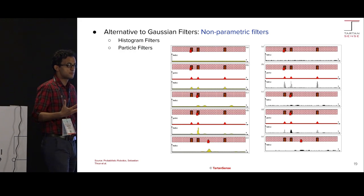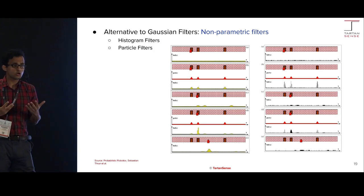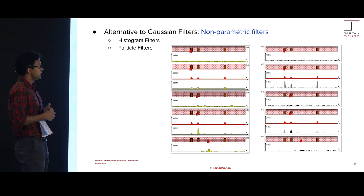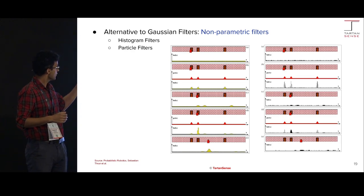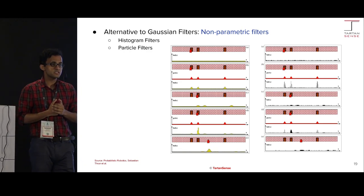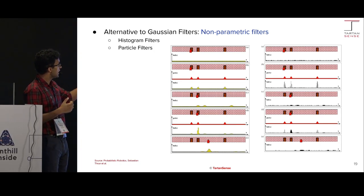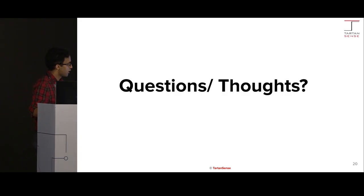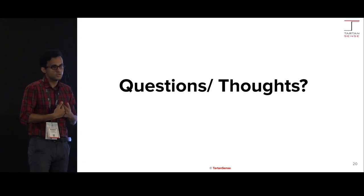I'd like to end with a glimpse of an alternative series: non-parametric filters. Until now we were discussing Gaussian or parametric filters with the assumption of Gaussians. Non-parametric filters have no such assumption. Two of the most common are histogram filters and particle filters — both work well in the robot scenario where EKF failed. In histogram filters, the belief is represented by a histogram; in particle filters, we use a bunch of weighted particles. If you'd like to discuss any of these algorithms or how to use them in your own project, please let me know. Thank you.